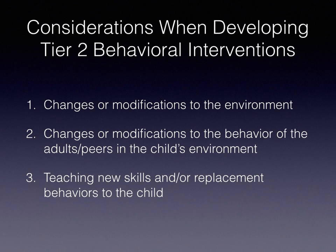When developing Tier 2 behavioral interventions, there are three things teachers can attempt to change or modify. The most important thing to look at first are any changes or modifications needed within the environment — things that are sensory related, whether the classroom is chaotic, whether seating arrangements are a problem, visual stimuli, lack of visual supports, inconsistent structure, or whether the child needs a visual schedule.